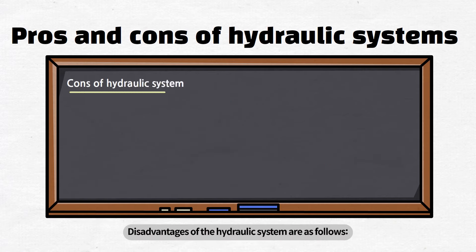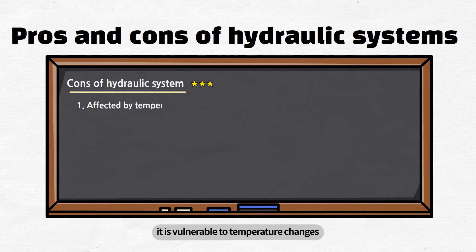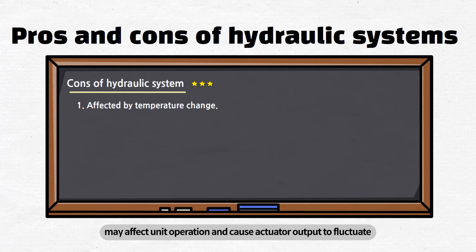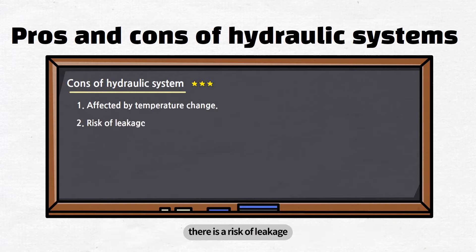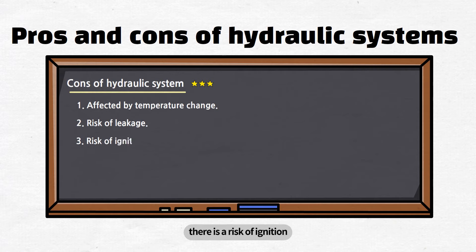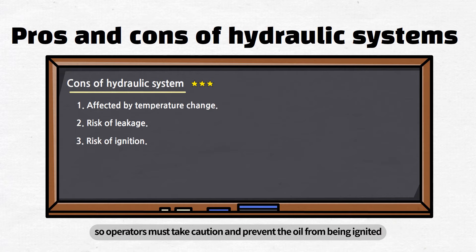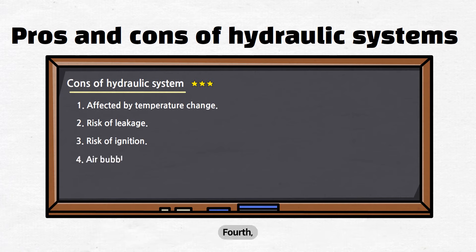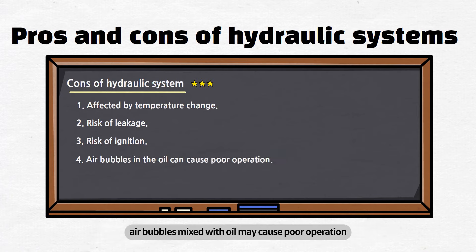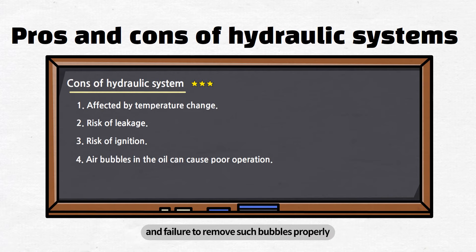Disadvantages of the hydraulic system are as follows. First, it is vulnerable to temperature changes. Viscosity decreased due to temperature changes may affect unit operation and cause actuator output to fluctuate. Secondly, there is a risk of leakage. Third, there is a risk of ignition — the working fluid is oil, so operators must take caution and prevent the oil from being ignited. Fourth, air bubbles mixed with oil may cause poor operation. Oil circulation may form small bubbles, and failure to remove such bubbles properly may result in poor operation of the actuator.